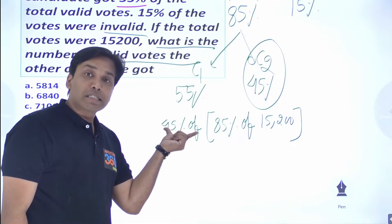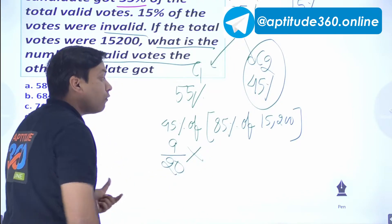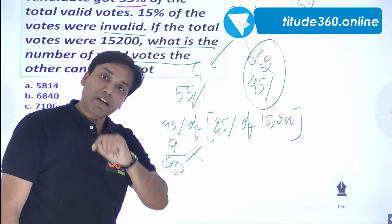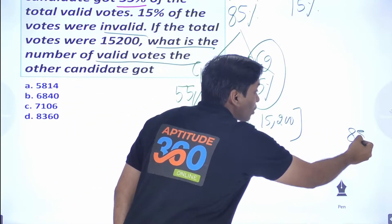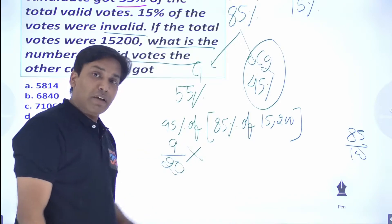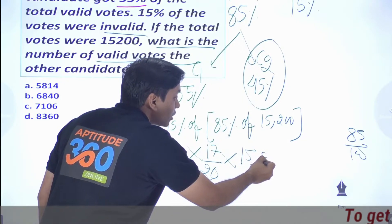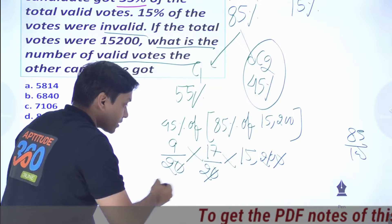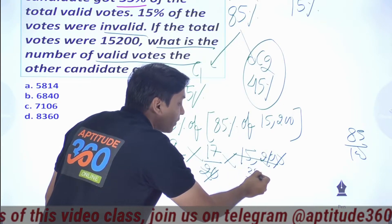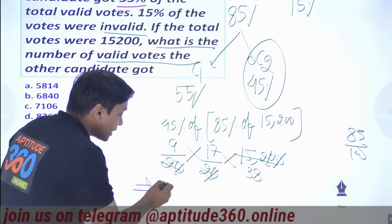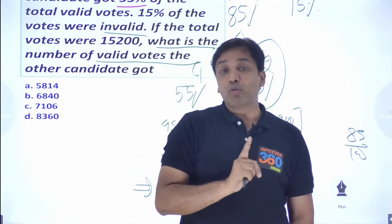So the calculation becomes: (9/20) × (17/20) × 15,200. Simplifying: 15,200 divided by 20×20 gives factors that reduce. We end up needing 9 × 17 × 38. Instead of fully solving, look at the last digit: 9 × 7 = 63, last digit 3; then 3 × 8 = 24, so last digit is 4.